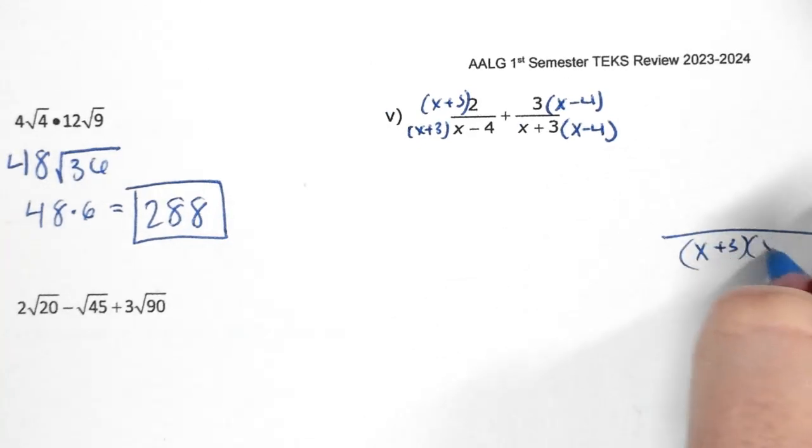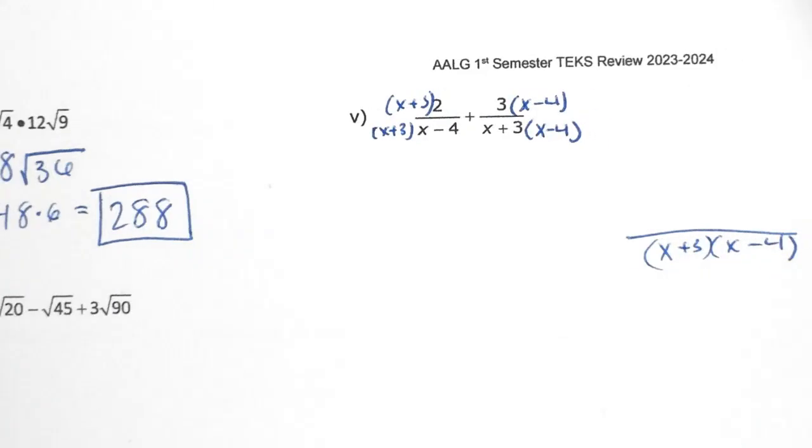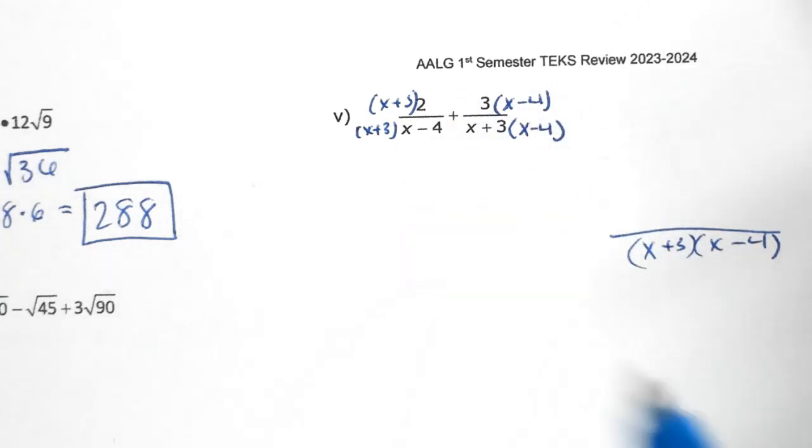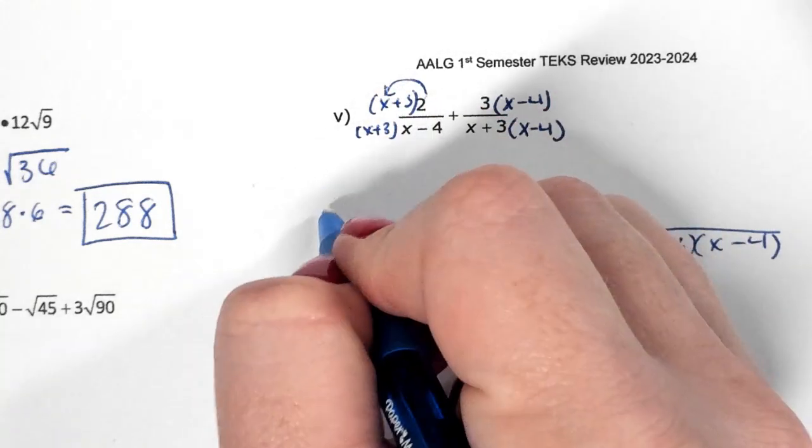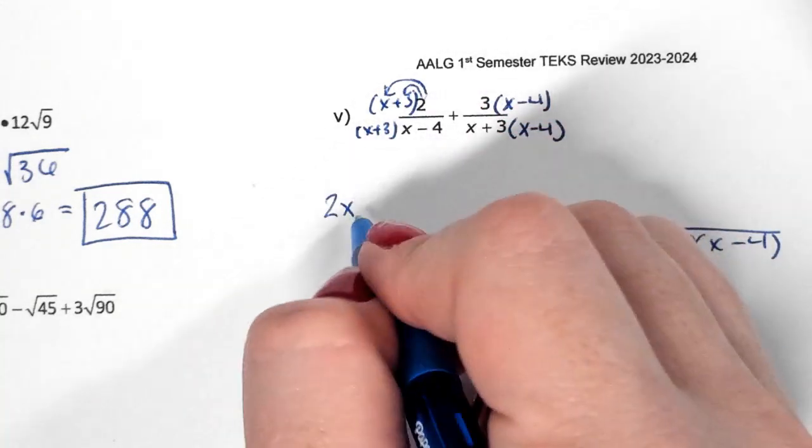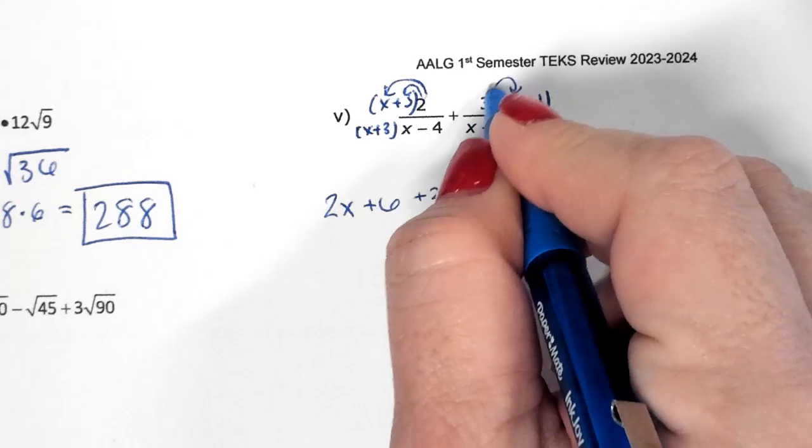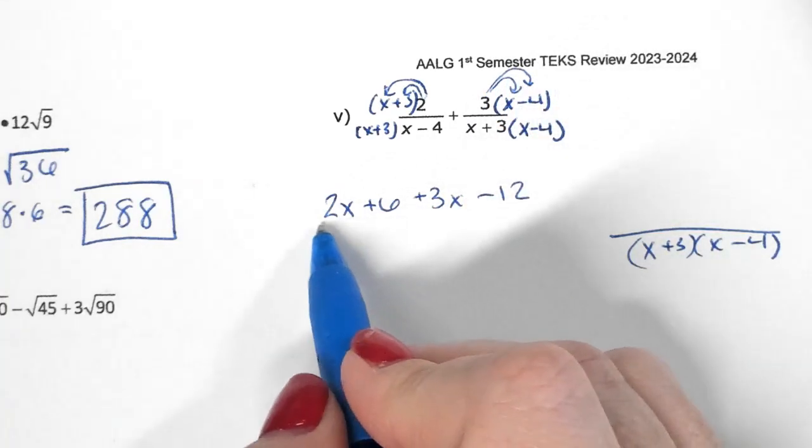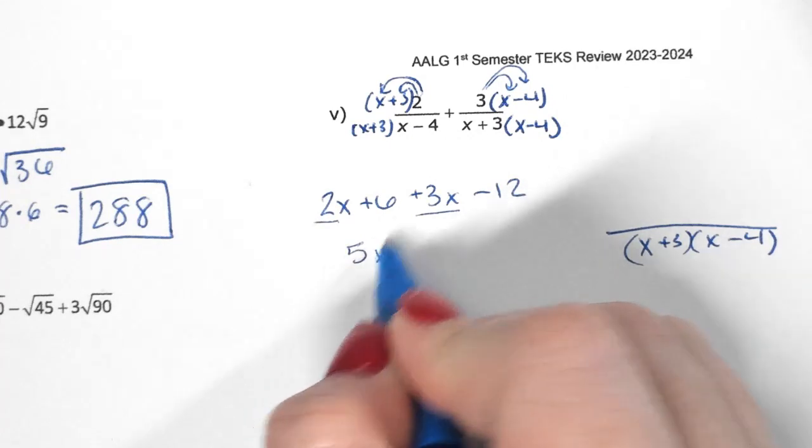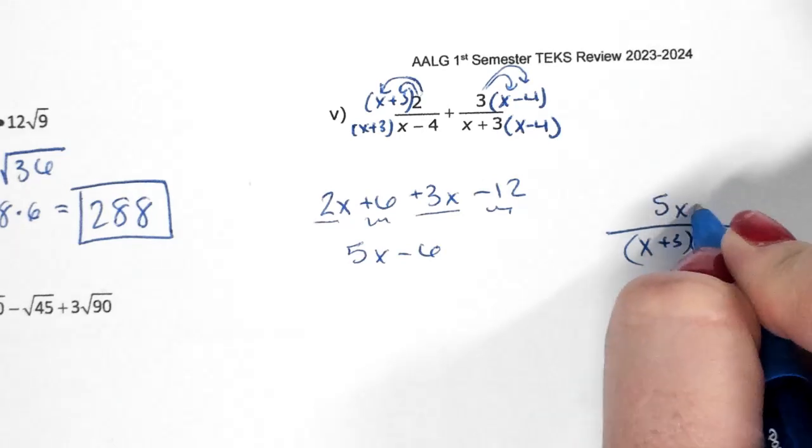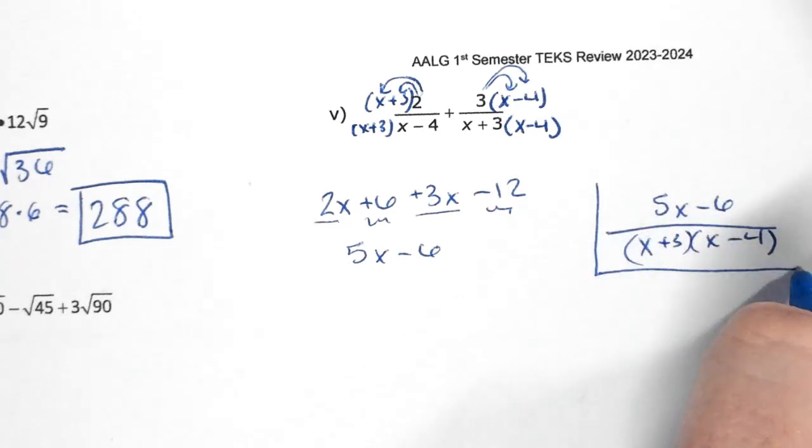So now I have to simplify the top, and I always like to simplify the top separately so I'm not rewriting the denominator a million times. So 2 times (x + 3): 2x plus 6. 3 times x is 3x. 3 times negative 4 is negative 12. Then I combine my like terms and I get 5x minus 6, which doesn't simplify or factor or anything. There's no GCF, nothing to take out, so that just stays what it is. There's your answer.